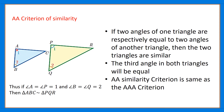If two angles of one triangle are equal to the corresponding angles of another triangle, then the third angle will obviously be the same, since the sum of angles in a triangle is 180°. In triangle ABC: angle A + angle B + angle C = 180°. Similarly in triangle PQR: angle P + angle Q + angle R = 180°. Since angle A equals angle P and angle B equals angle Q, subtracting gives us angle C equals angle R. Therefore the AA criterion can also be called the AAA criterion.